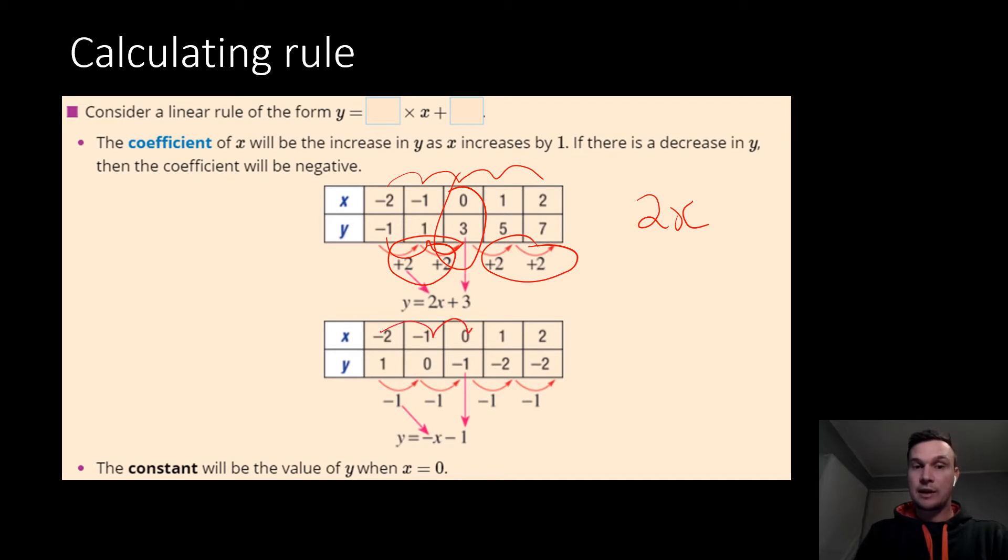As you can see, it is going up in 1s, which is fine. And this is also going down in 1s. So our coefficient for this one will be negative 1x. But we know we don't write negative 1, so it's just negative x. So you'll see there.